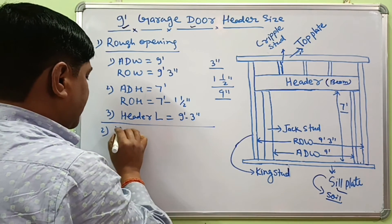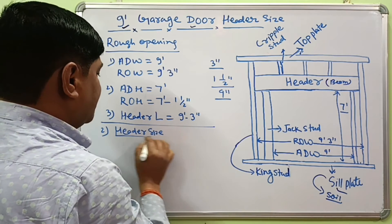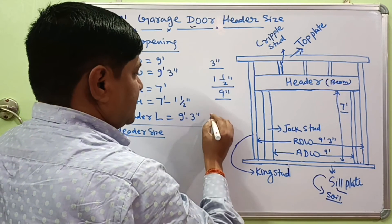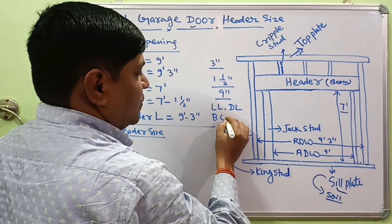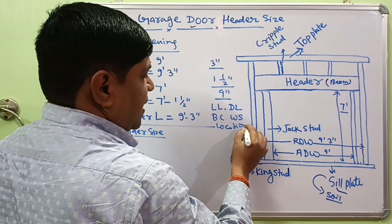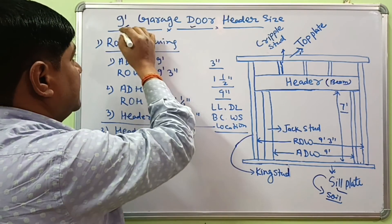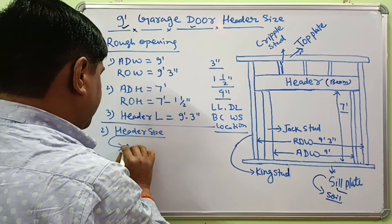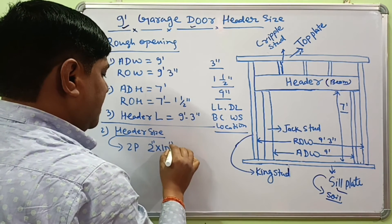Now we have to find the correct header size for a 9 foot garage door. We know that header size depends on live load, dead load, building code, wood species, location, and many other factors. But our suggestion is that if your garage door is 9 foot wide, then you need about 2 pieces of 2 by 10 inch lumber.